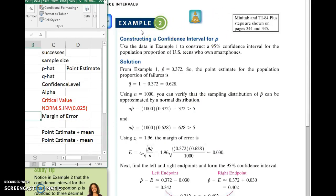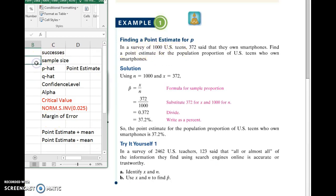So let's walk through Example 2 on page 322. It says, use the data in Example 1 to construct a 95% confidence interval for the population proportion of U.S. teens who own smartphones. So let's go back and look at Example 1. Here we had a survey of 1,000 U.S. teens, so our sample size is 1,000. 372 said they had a smartphone. And that's our definition of success in this survey.